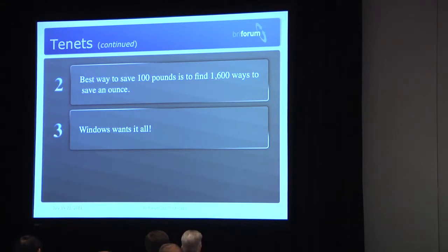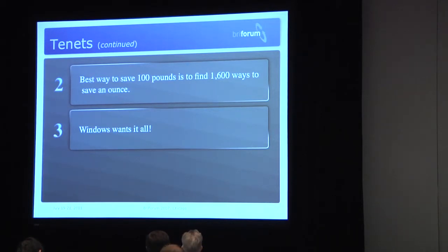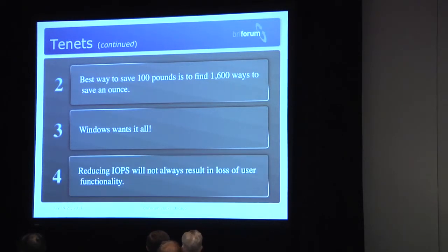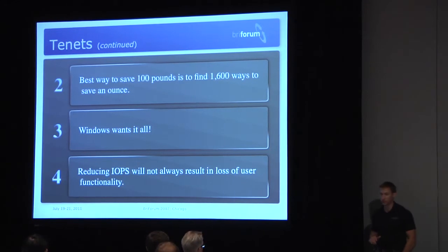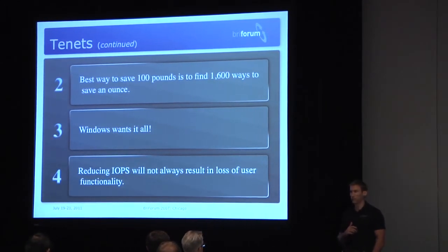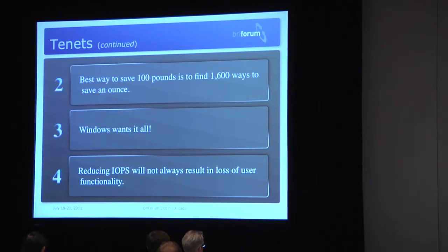Always know that Windows wants it all — Windows wants to consume as much IO as possible, as fast as possible. Reducing IOPS will not always result in a loss of user functionality. Your job as an admin, when you do some of these tweaks, is that the user may not even know, but it will have huge benefits on the back end.